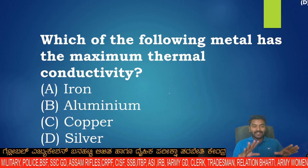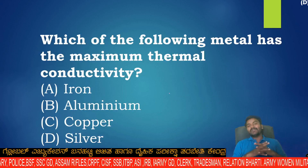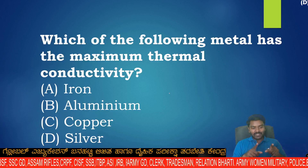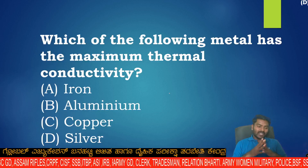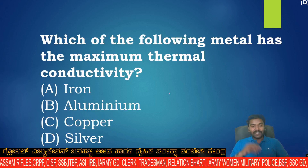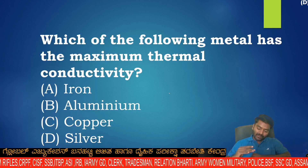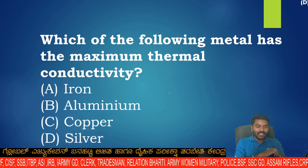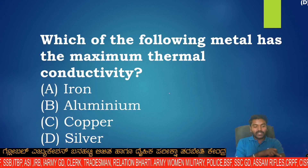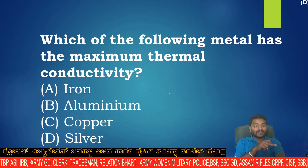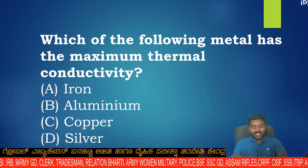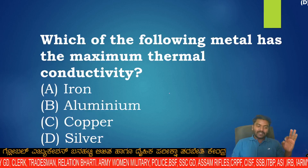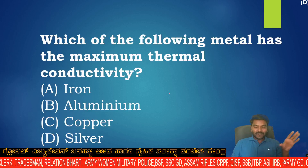Which of the following metals has the maximum thermal conductivity? This is an example related to heat transfer. The maximum thermal conductivity is found in silver — silver has the maximum thermal conductivity.